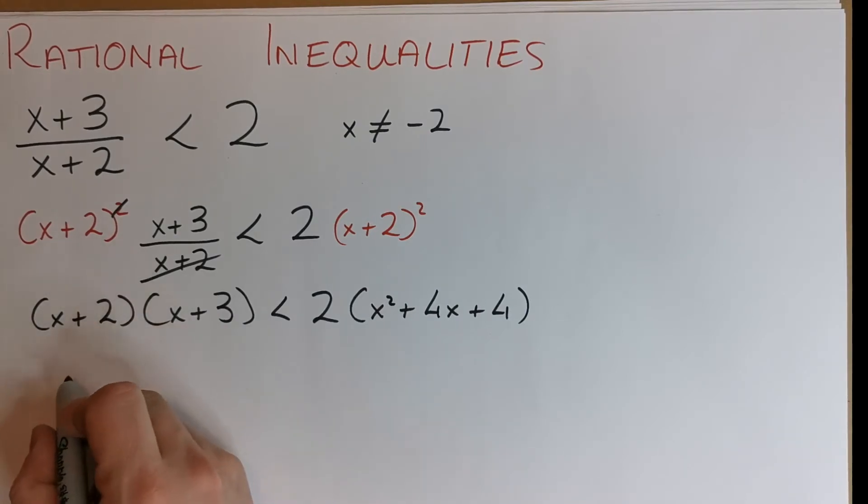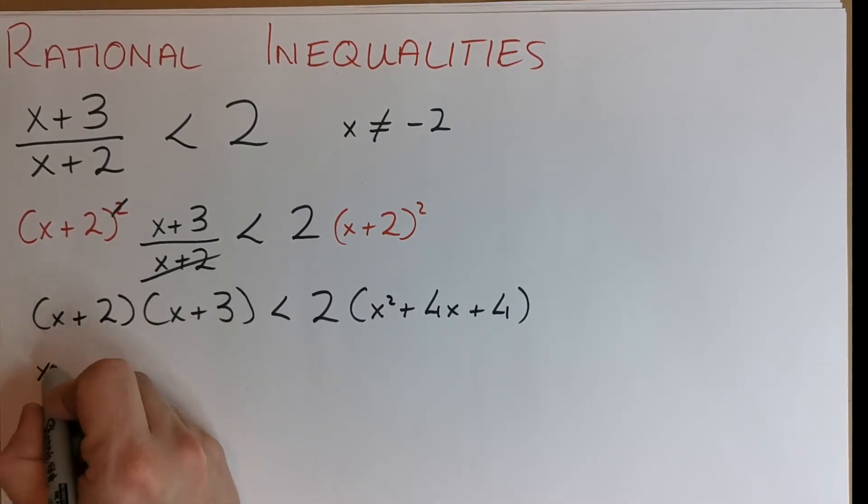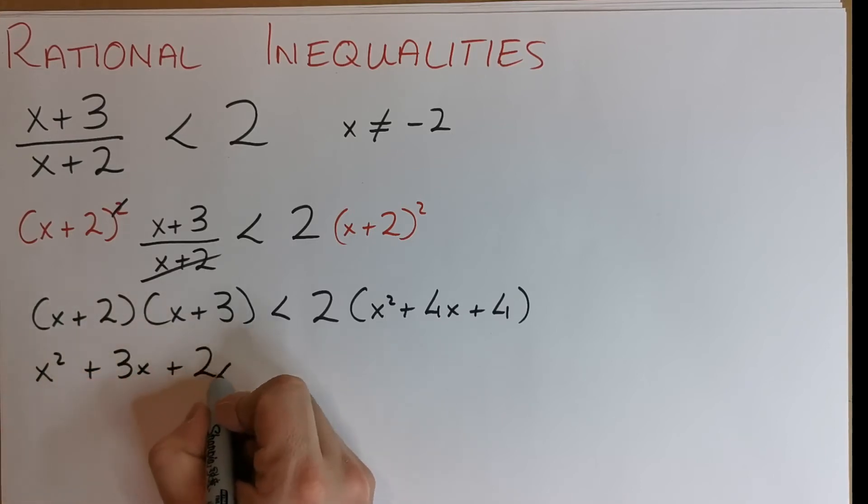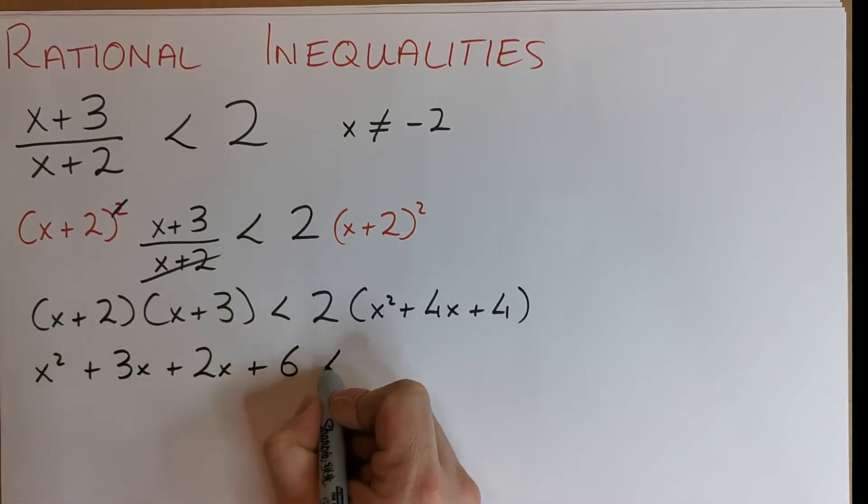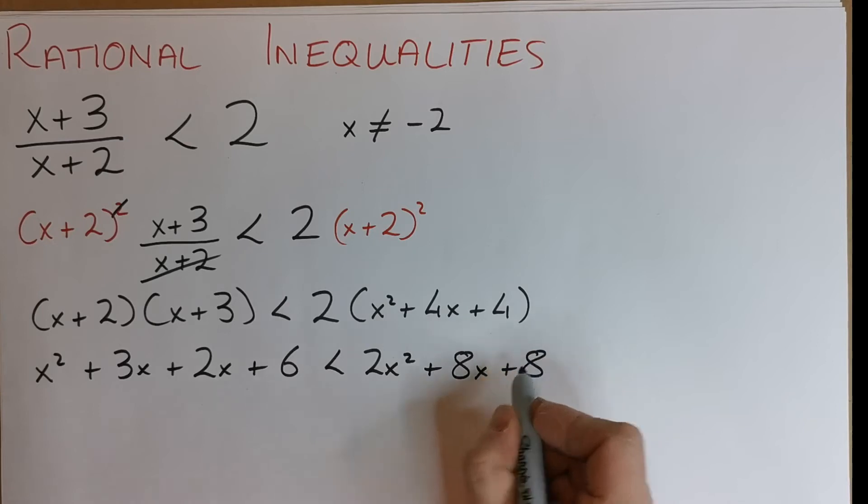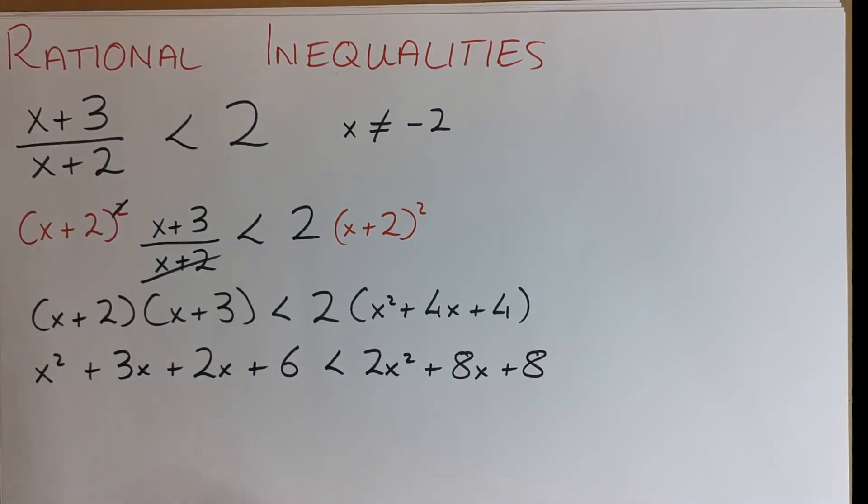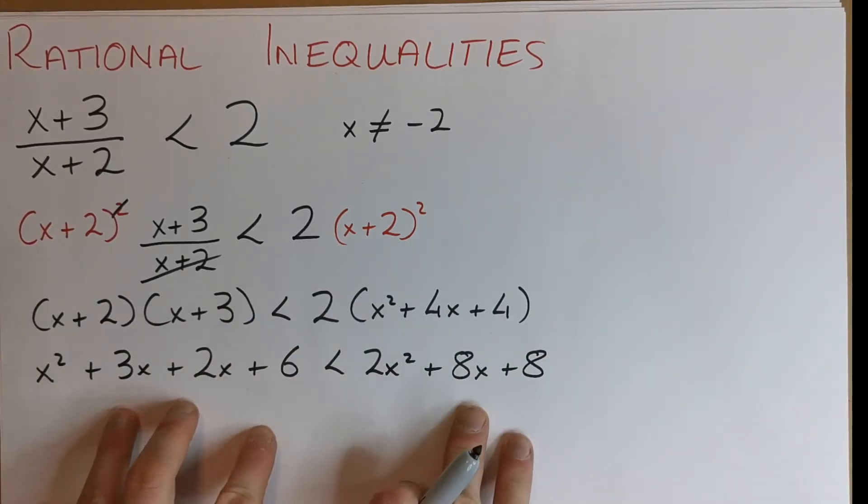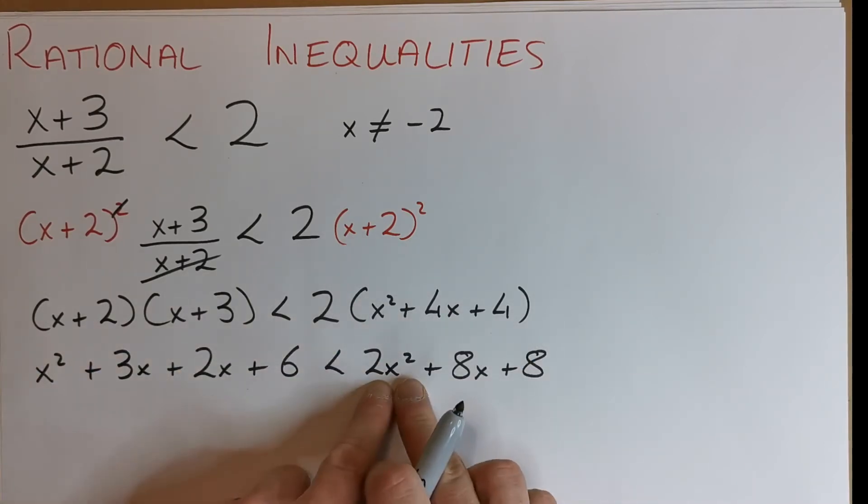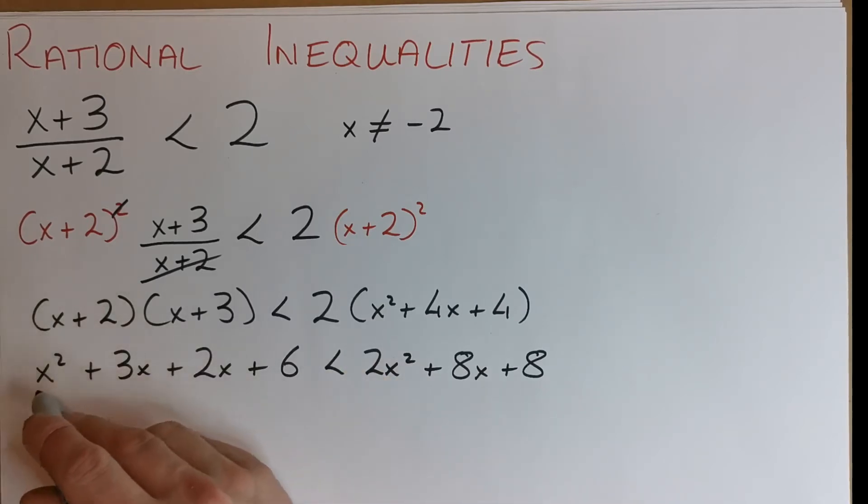Now let's multiply out the left. x by x is x squared plus 3x plus 2x plus 6 less than 2x squared plus 8x plus 8 when we distribute the 2. So we have two quadratics either side. Let's bring all this stuff over. I always keep my quadratic term, my squared term positive. So let's leave zero on the left hand side.